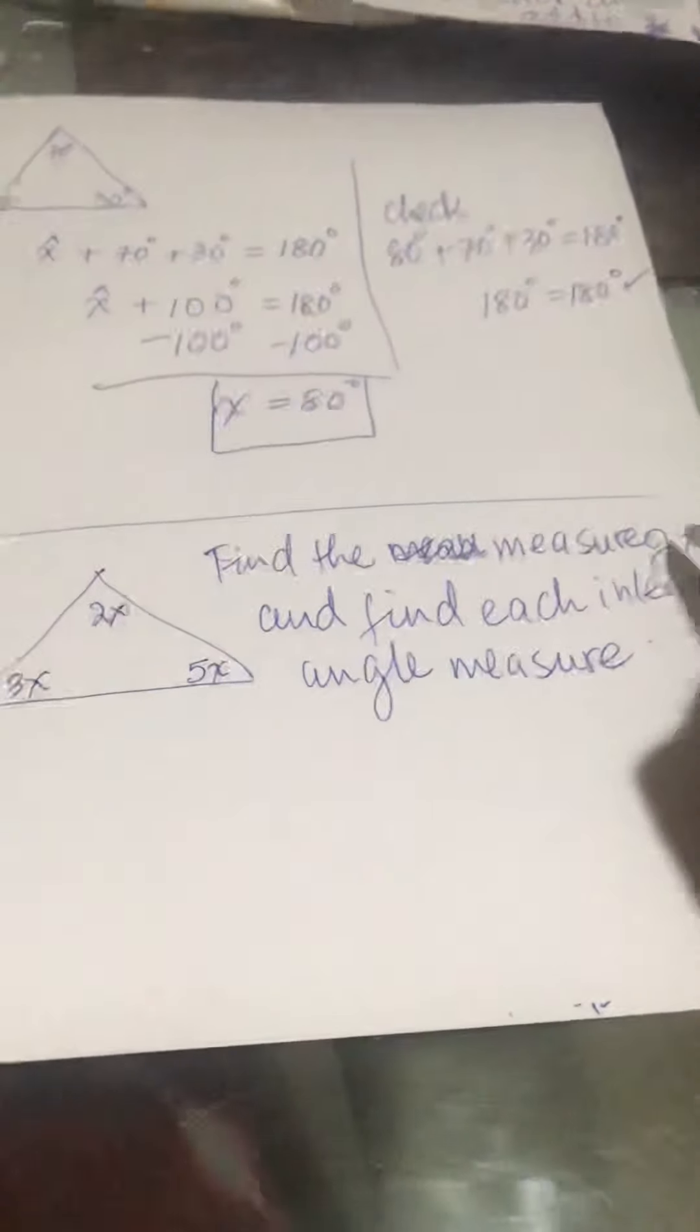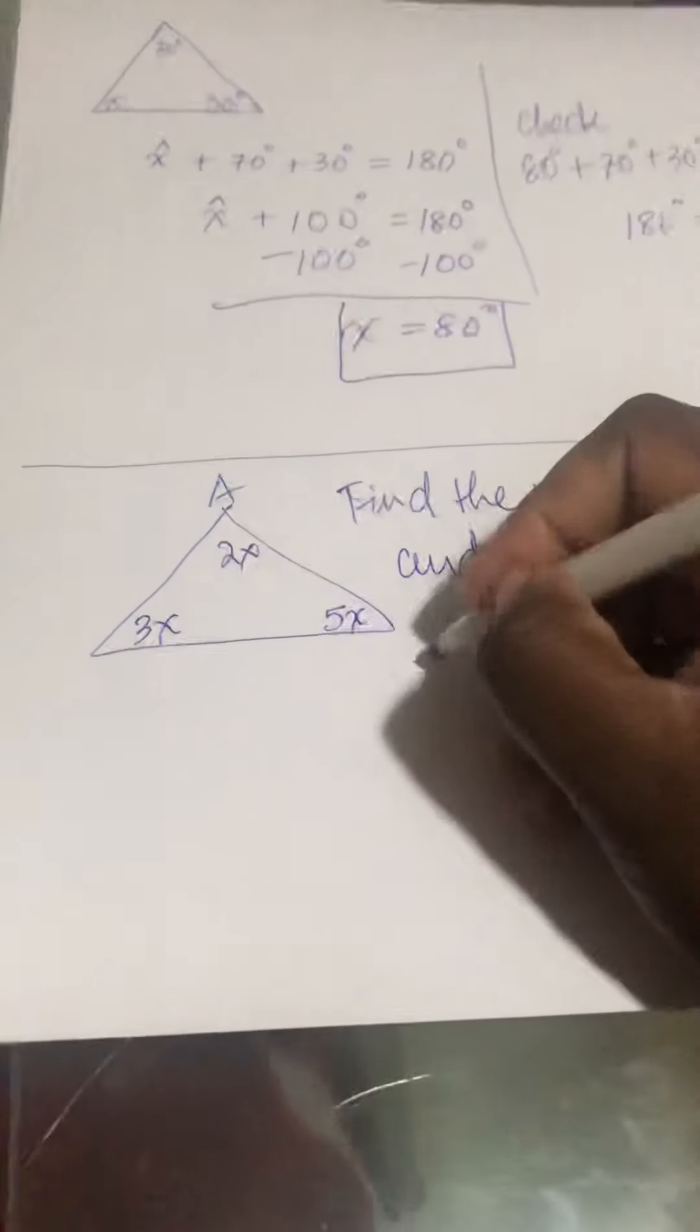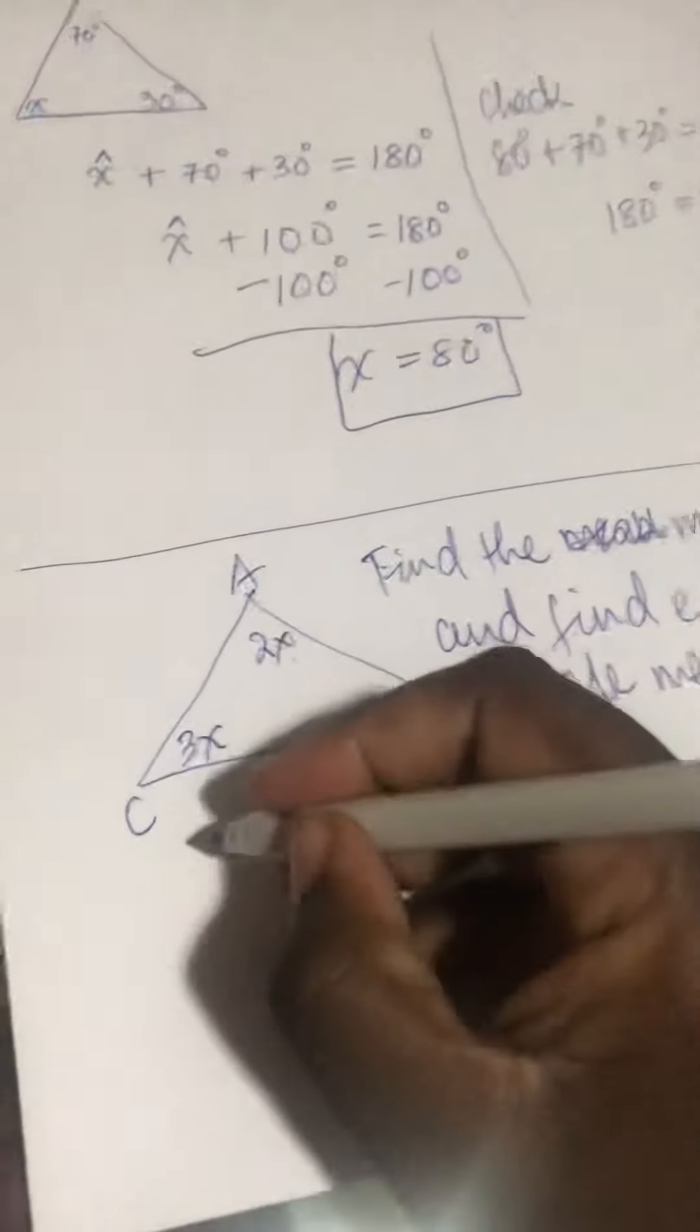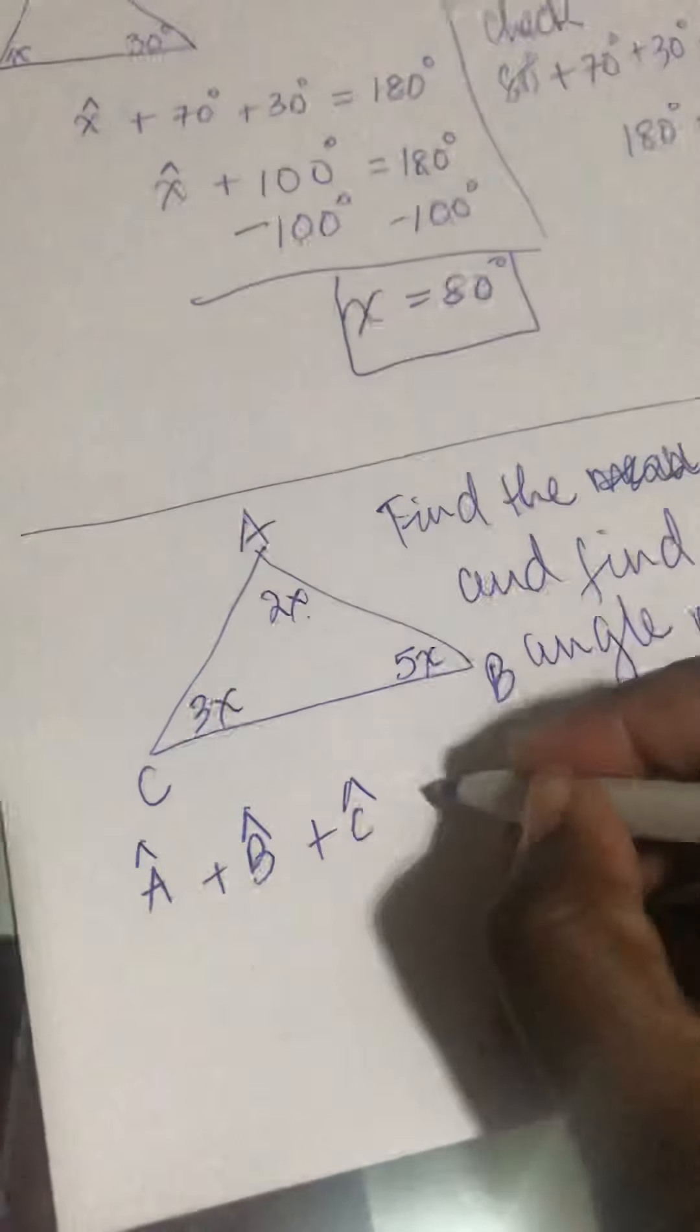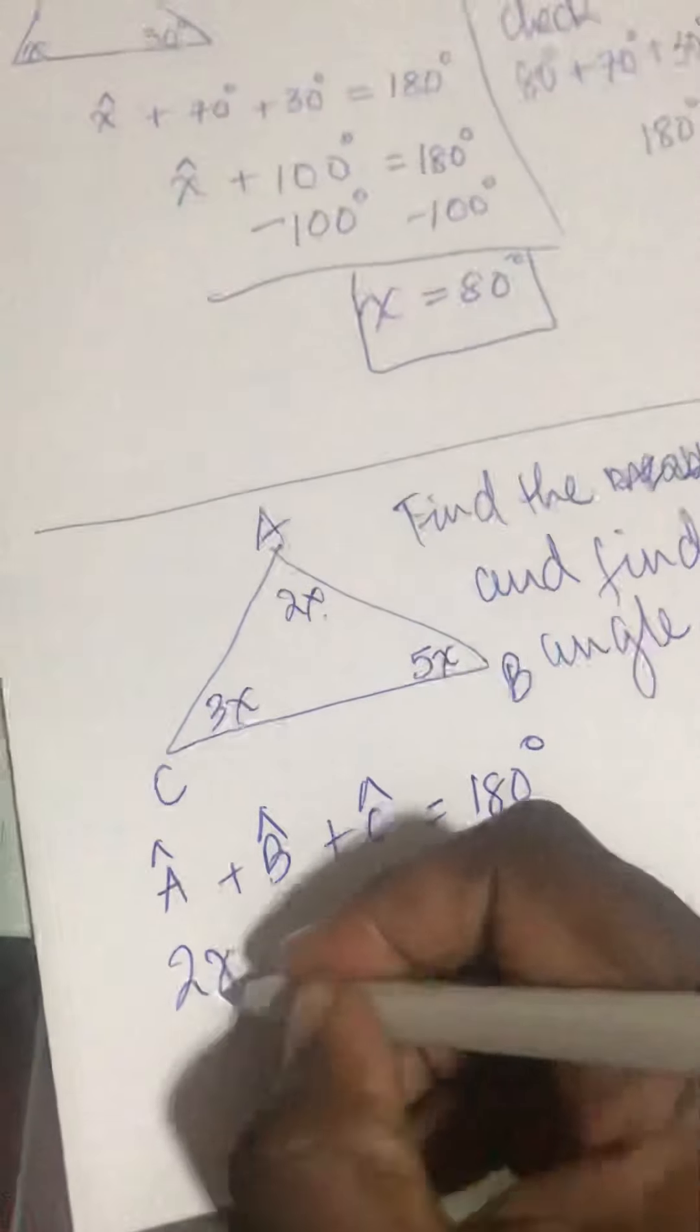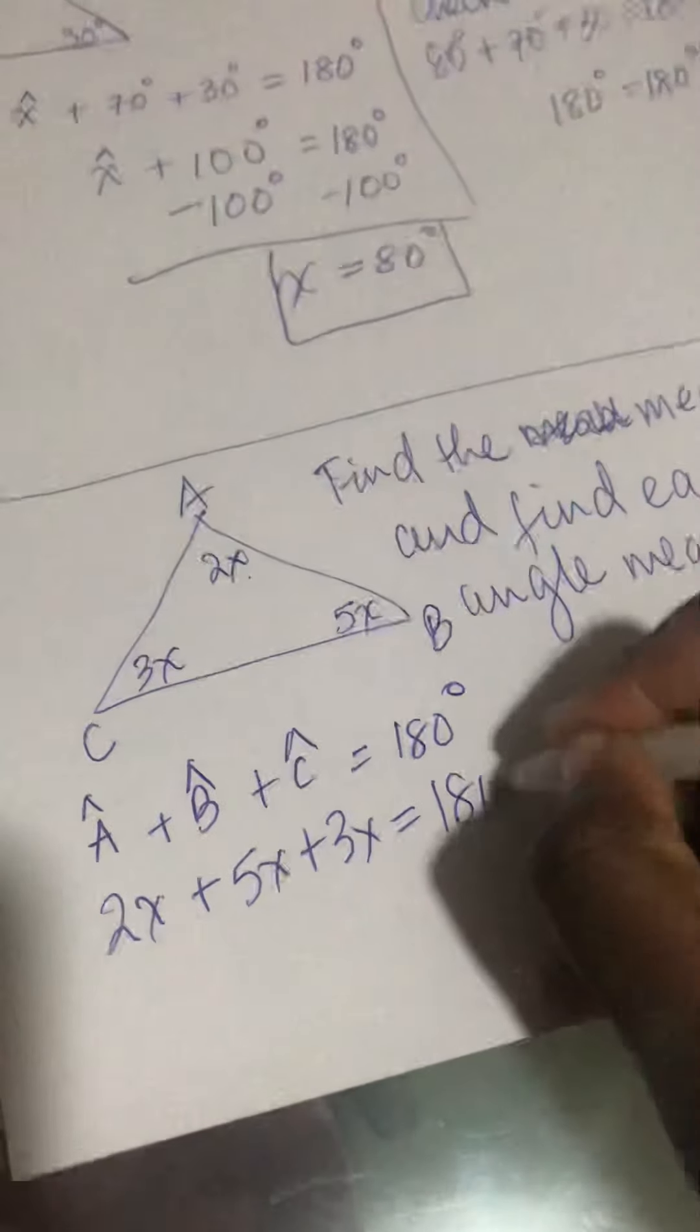So that means you have two things to do. One, find x. After you find x, find each interior angle. So I'm gonna label this A, I'm gonna label this B, I'm gonna label this C. So I'm gonna say angle A plus angle B plus angle C gives me 180 degrees. 2x plus 5x plus 3x equals 180 degrees.